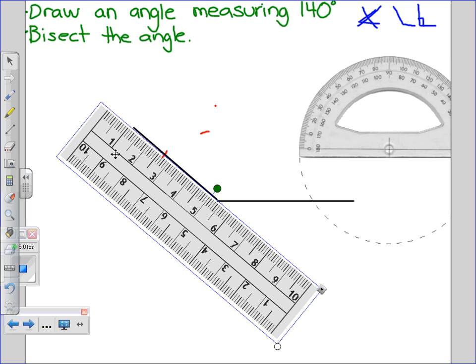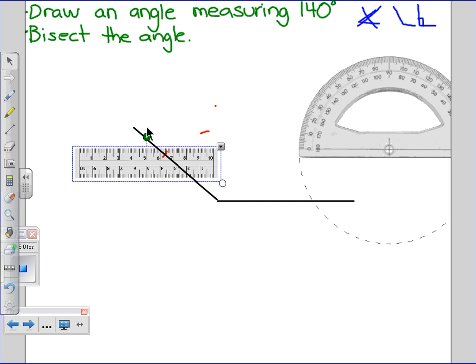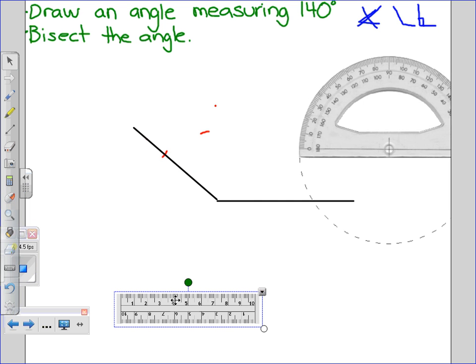Now, I can take my ruler, and I can just shoot that. I don't need that at the moment. I'll just move that over here. Now, I have an angle that measures 140 degrees. That's the first part that's done.